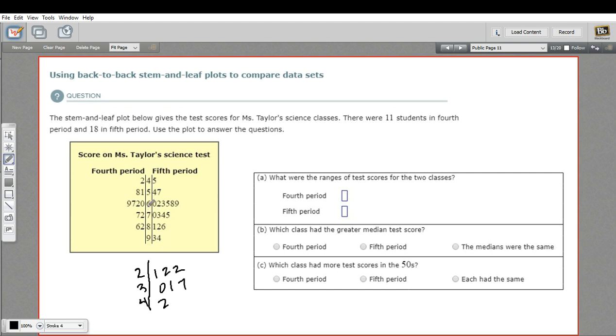A back-to-back stem and leaf plot allows you to compare two sets of numbers. So what we have in the middle here is our tens digit. So the fifth period which is on the right had a 45, a 54, a 57, etc. And the fourth period had a 42, a 58, a 51. So that's how to interpret these.